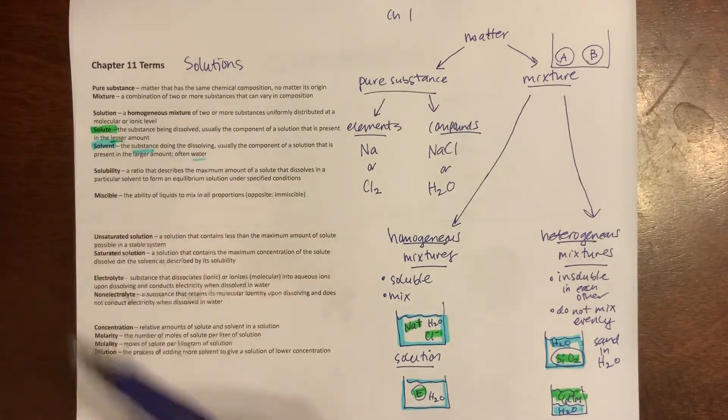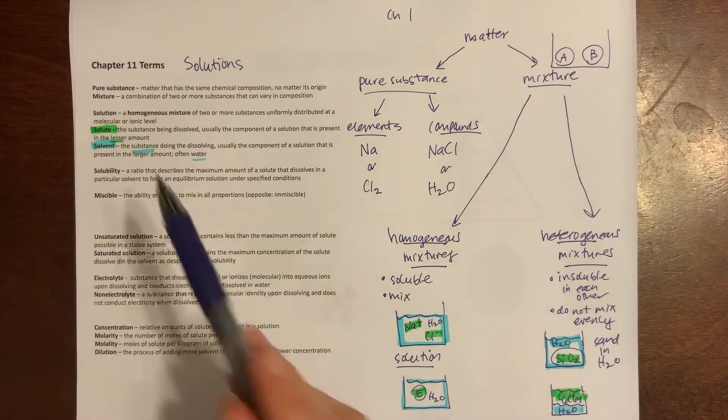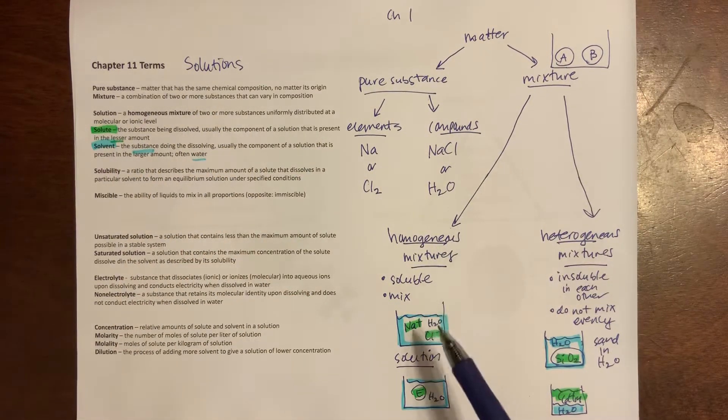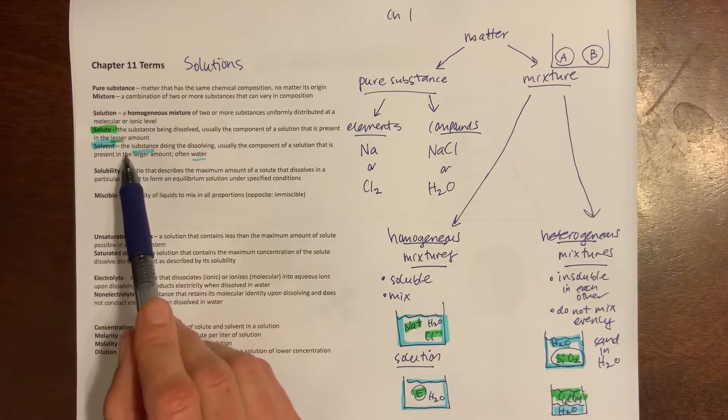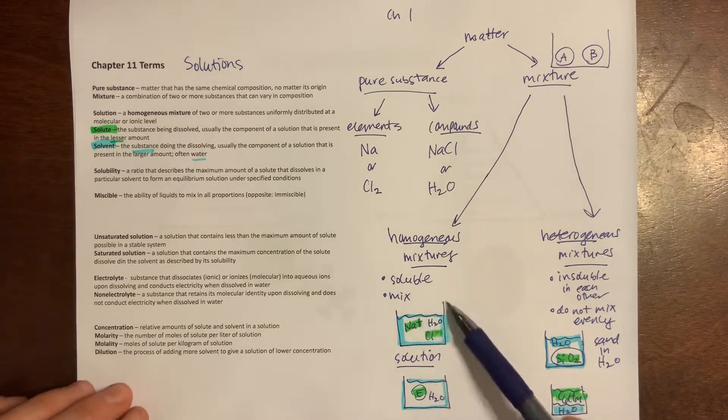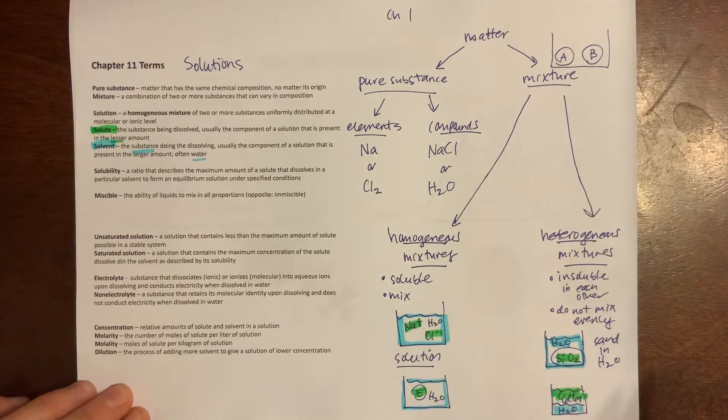We're working on Chapter 11 looking at solutions. We talked about how in a solution it's a homogeneous mixture and I have a solute and a solvent. We're using green for solutes and blue for solvents. We're going to take these two solutions here and look at them in a little bit more detail.